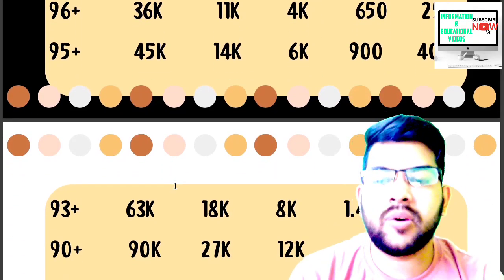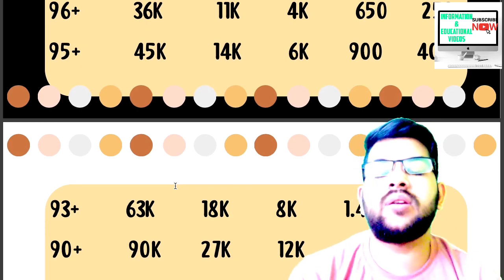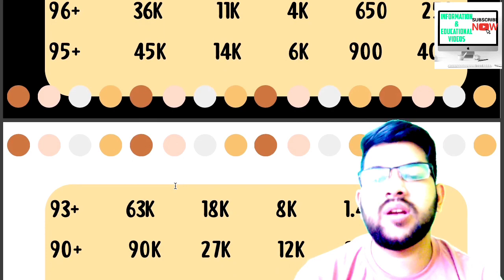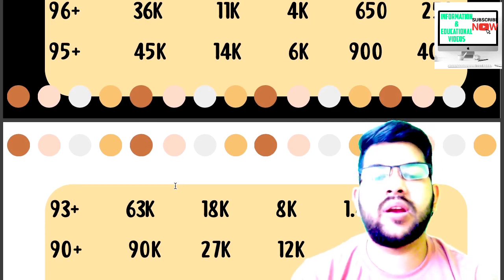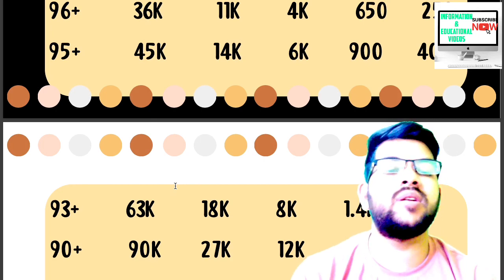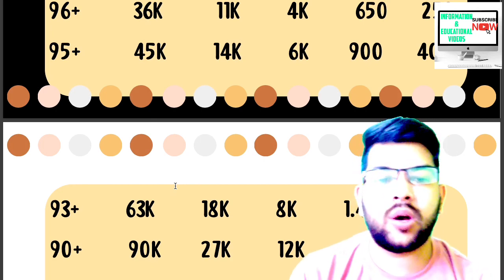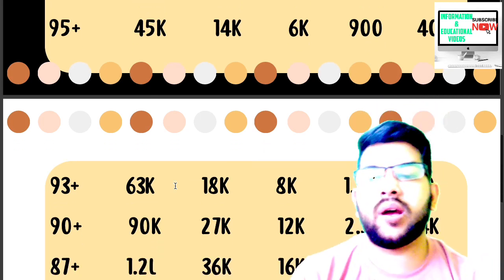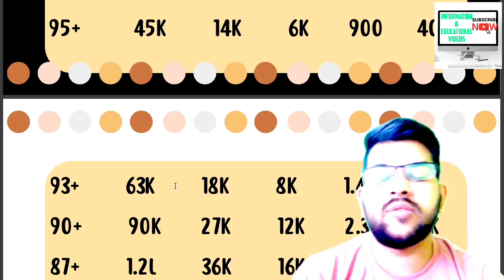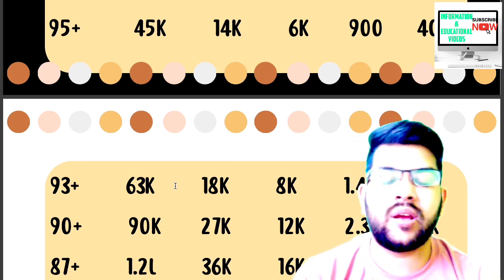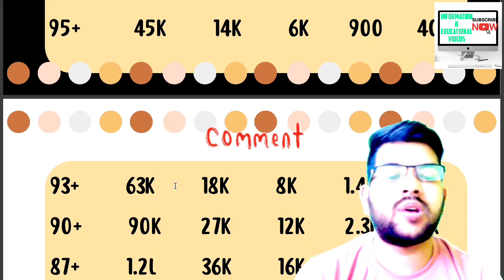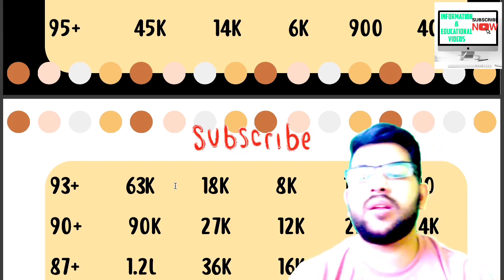For 93 plus percentile: CRL rank under 63,000, OBC under 18,000, EWS under 14,000, ST under 740. For 90 plus percentile: CRL under 90,000, OBC 27,000, EWS 12,000, SC 2,300, ST 1,400 or less.